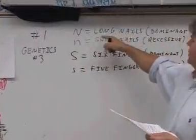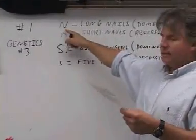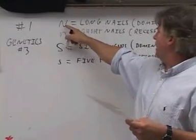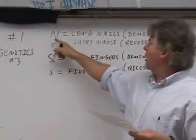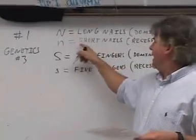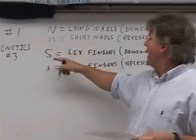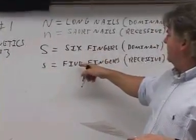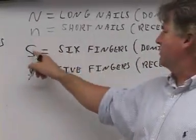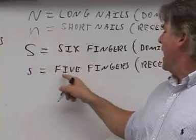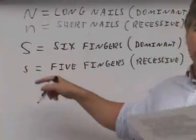The first thing you want to do is write down your traits. For this one, it says that long nails is dominant to short nails, so for long nails we use a big N, and for short nails we use a little N. Then it says six fingers is dominant to five fingers, so since six fingers is dominant we use a big S, and since five fingers is recessive we use a little S.